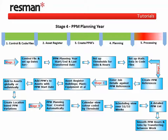Stage 4 is the planning stage where the PPM planning year is automatically created by the simple process of attaching a PPM reference and a start date to an asset. We can view the PPM plan in a number of ways: through a calendar view with work thresholds traffic light colour coding, through a scheduling 52 or 53 week view, and a PPM detail list. On these forms we can transfer jobs between weeks to smooth the plan.